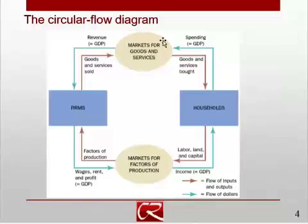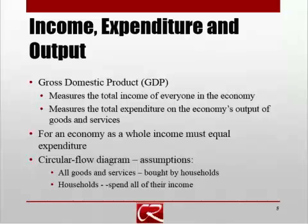Fundamentally, when we look at things in a macroeconomic context, revenue, spending, income, and production are all the same thing. Everything that people are spending money on, firms are producing those goods and services. So in macroeconomics, income, expenditure, production, and output are all different ways of saying the same thing. And gross domestic product is how we measure that — it's how we measure total economic activity, mostly by total expenditures, though we could also think about total income.